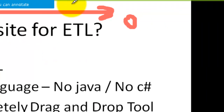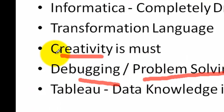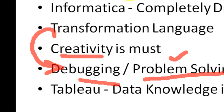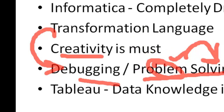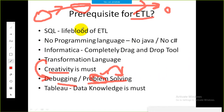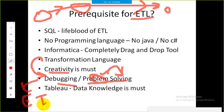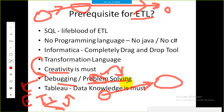Debugging and problem solving is another key requirement. Problem solving means identifying what we need — for example, all employees with a salary greater than 20,000 — and figuring out how to solve it, such as implementing a filter transformation. Debugging means cross-checking at each step; this is where the ETL tester comes in, checking how data flows completely from source to target and identifying where things go wrong.